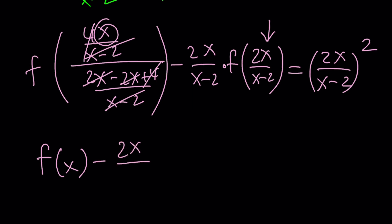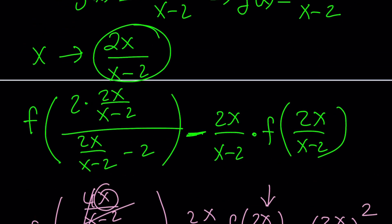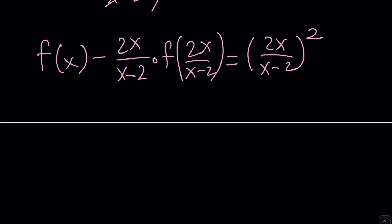Minus 2x over x minus 2 times f of 2x over x minus 2 equals 2x over x minus 2 quantity squared. So that's a new equation that we obtained from the first one, but we still have the first one, don't we? So let's go ahead and copy that here and see what we can do with these two equations. Two equations is good because we have two unknowns, even though we have a single variable, f of x in this case, and f of 2x over x minus 2 are both variables. By the way, notice we're not solving for x, we're solving for f of x.